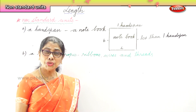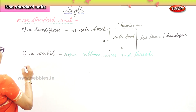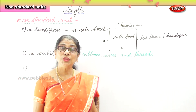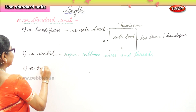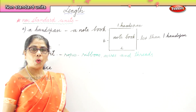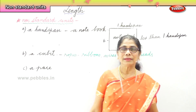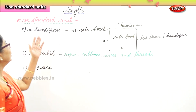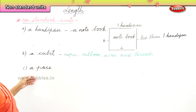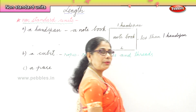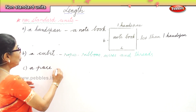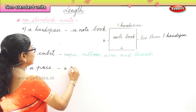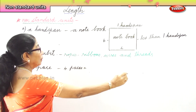The third non-standard unit is a pace. When you say pace, it is how you walk — not taking long strides, just normal walking. I would like to measure this board in paces. One, two, three, four. If I make four paces, I will say: the length of this writing board is four paces.